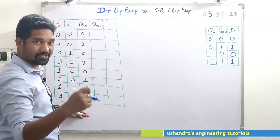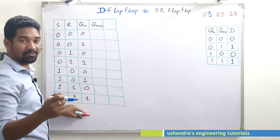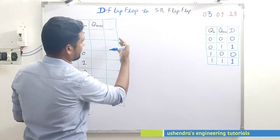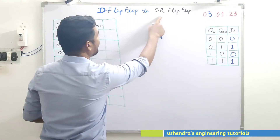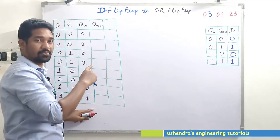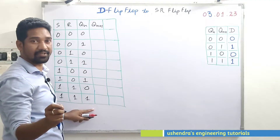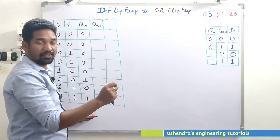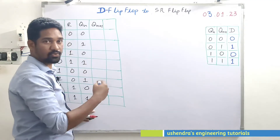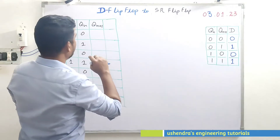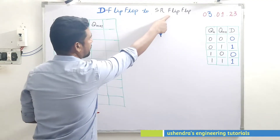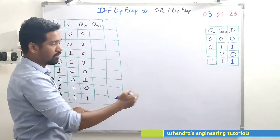Here's another important flip-flop conversion from an exam point of view. D flip-flop to SR flip-flop conversion is repeatedly asked in exams. A suggestion to beginners: straightaway jumping into the conversion process is tedious unless you understand the truth tables and excitation tables. So go through and get used to excitation tables and truth tables, then go for the conversions. This is the given flip-flop and this is the destination flip-flop we have to design.